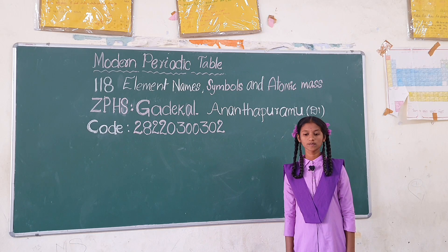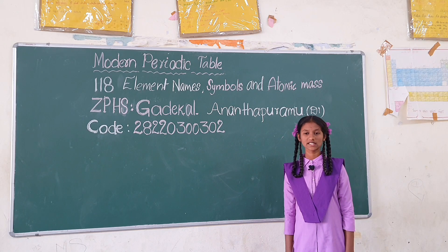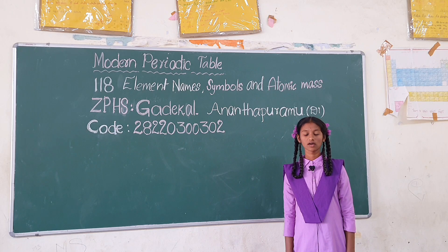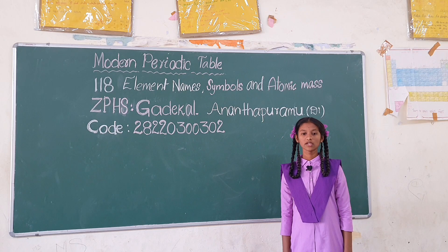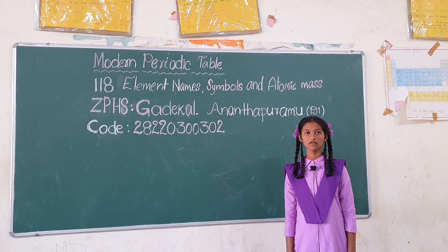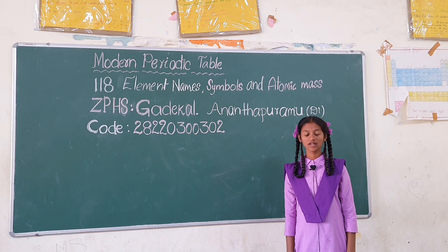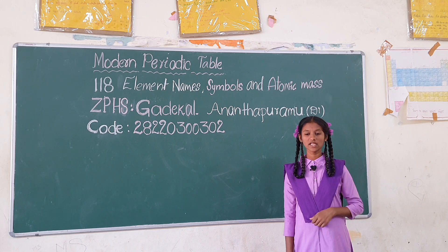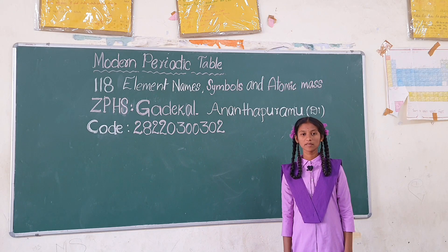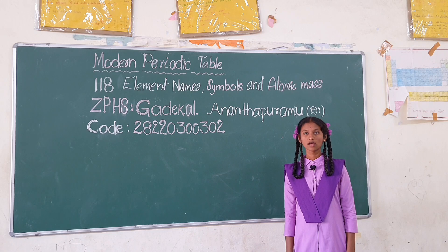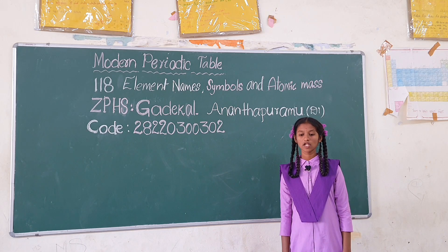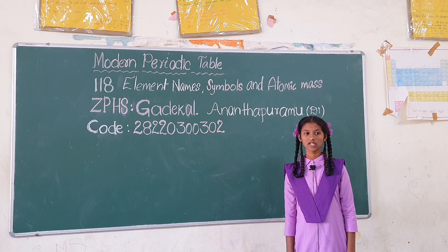Neodymium Nd 144.2, Promethium Pm 145, Samarium Sm 150.4, Europium Eu 152, Gadolinium Gd 157.2, Terbium Tb 158.9, Dysprosium Dy 162.5, Holmium Ho 164.9, Erbium Er 167.3, Thulium Tm 168.9, Ytterbium Yb 173, Lutetium Lu 175.